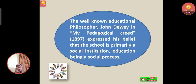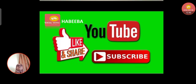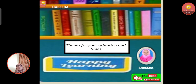The well-known educational philosopher John Dewey, in 'My Pedagogical Creed' in 1897, expressed his belief that the school is primarily a social institution, education being a social process. This concludes our topic on the socialization of the child. If you like the class, please like, share, subscribe, and comment below. Thanks for your attention and time. Happy learning.